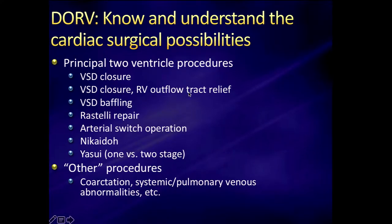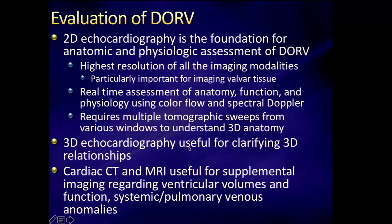You really have to know what the important surgical procedures are — a list of potential surgeries depending on what type of DORV you have. In our institution, 2D echo is the foundation of anatomic and physiologic assessment of DORV: highest resolution of all imaging modalities, real-time assessment of anatomy, function, and physiology using color-flow and spectral Doppler. You need multiple tomographic sweeps with various windows to understand 3D anatomy. We use 3D echo to clarify 3D relationships, and also CT and MRI to quantify volumes, function, and look at systemic and pulmonary venous anomalies.